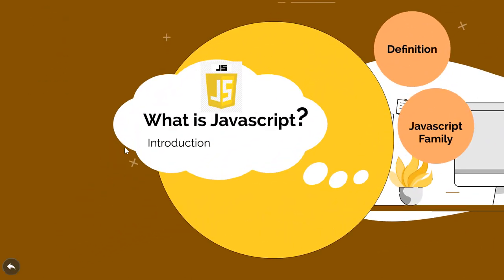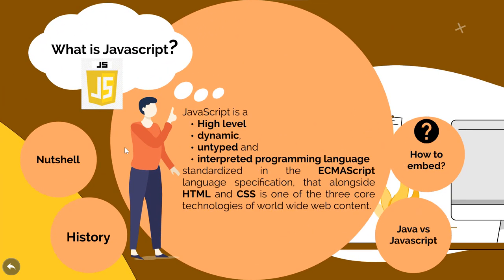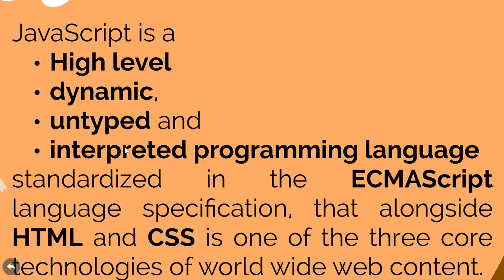So let us start by introducing this great language. First, what is JavaScript? JavaScript is a high level, dynamic, untyped and interpreted programming language standardized in the ECMAScript language specification, that alongside HTML and CSS is one of the three core technologies of World Wide Web content. This definition speaks a lot about the language, but there are some terms that need further elaboration.